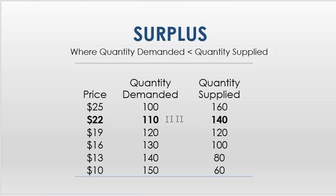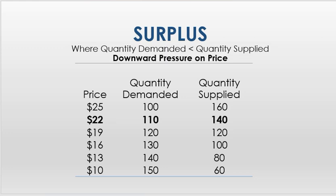If quantity supplied is greater than quantity demanded, then we have a surplus. When we have a surplus, there are extras left over, and we don't want extras left over. So what we're going to see is downward pressure on the price. Let's say these are cookies — really expensive cookies. If we have 140 to sell at $22 and only 110 people willing to buy them, we don't want to hold on to these cookies, so we're going to have to lower the price to get rid of them.